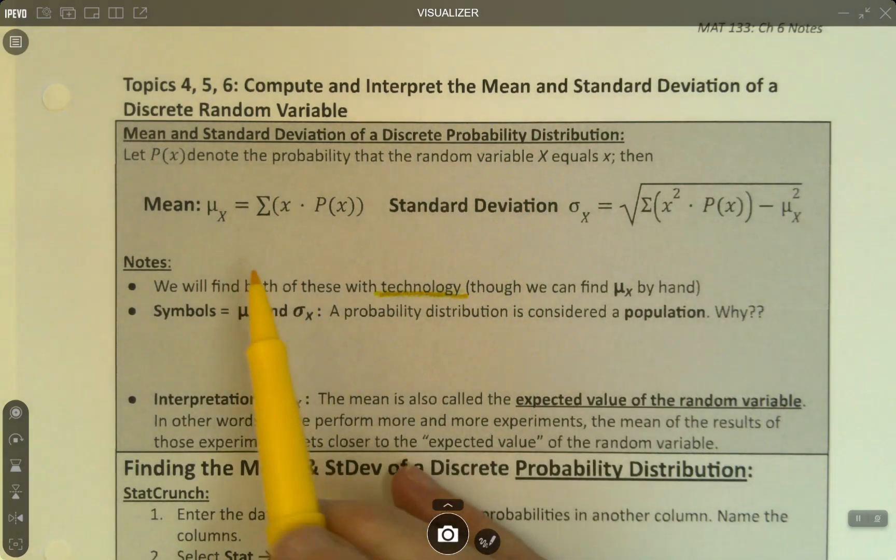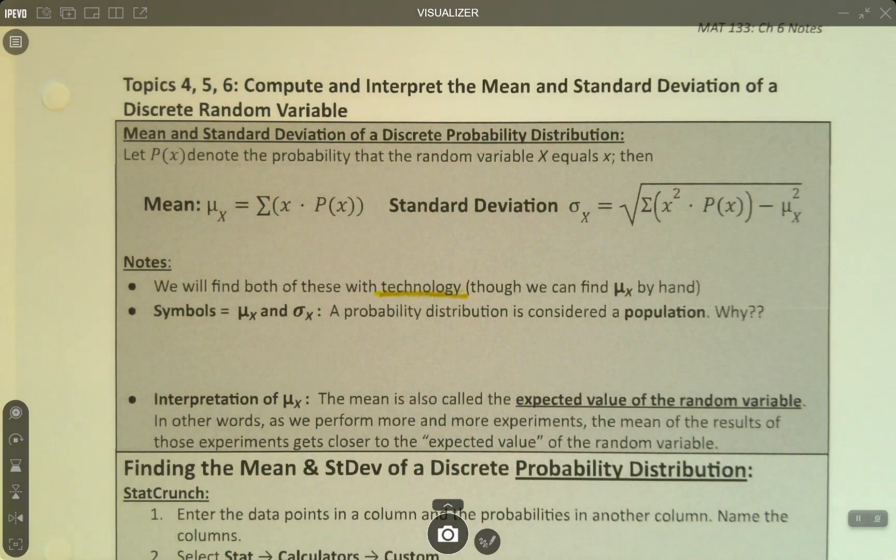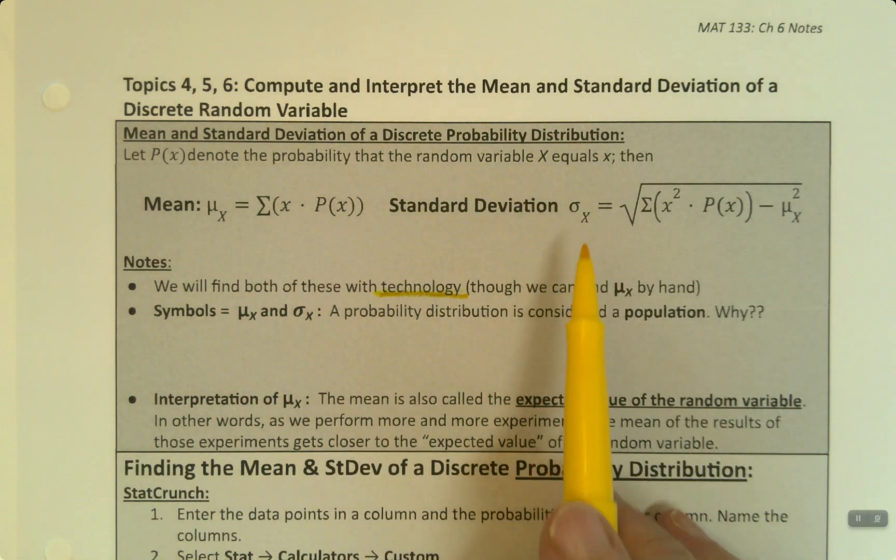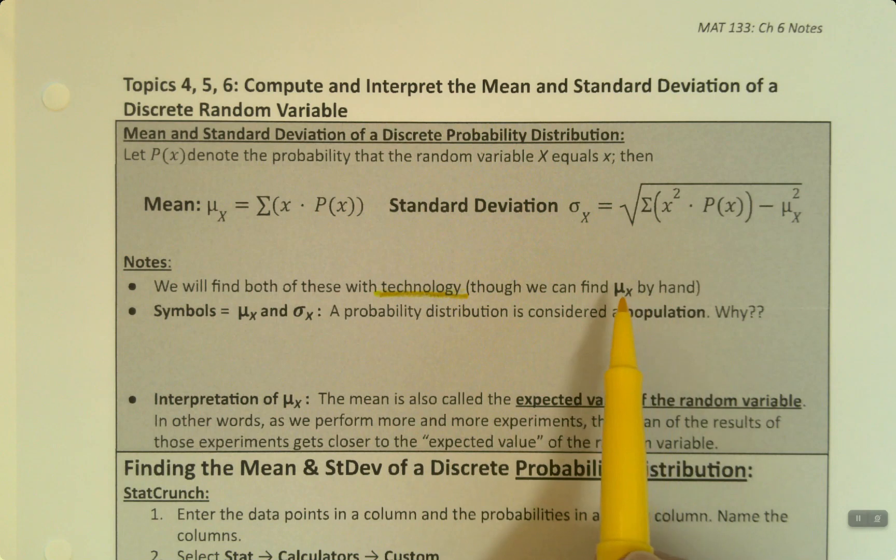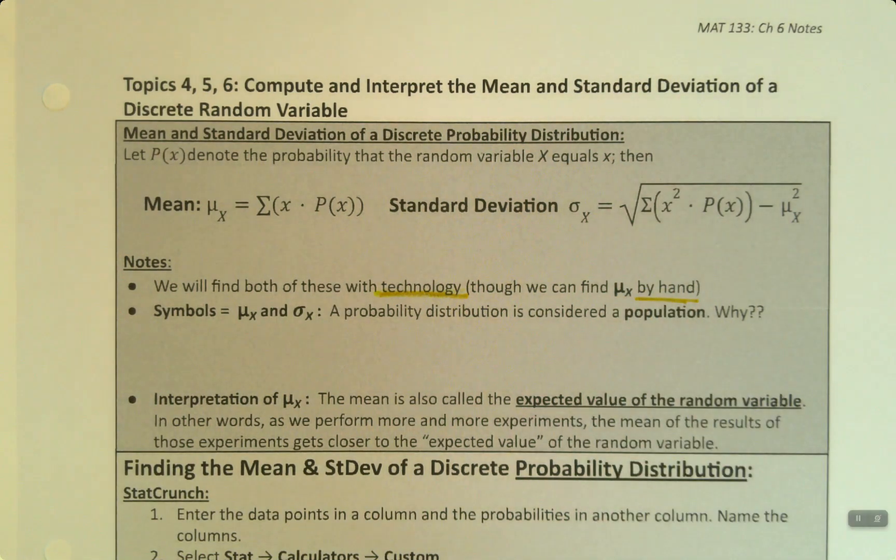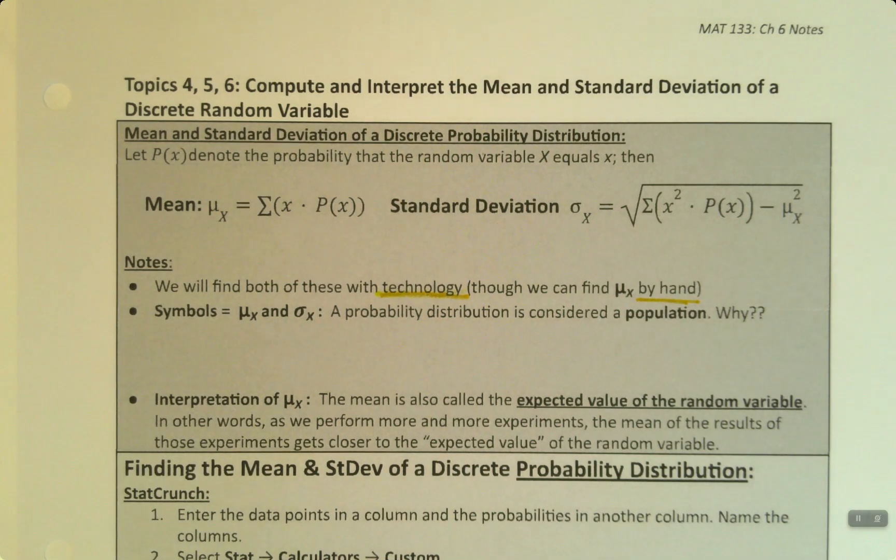So don't get worried about the x, the x doesn't really mean anything. Now we're going to find these with technology, especially the standard deviation. We're also going to find the mean by hand, primarily because it's not very difficult to find by hand, and you'll be able to do either one, whichever way you're more comfortable with. But not for standard deviation. There's no point in doing that by hand.